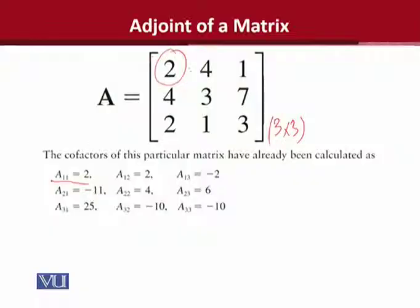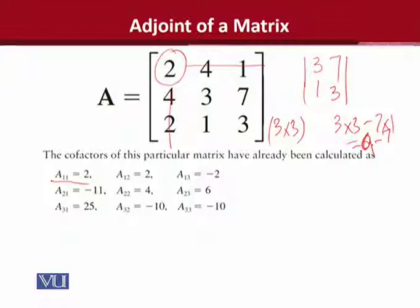For example, at the place of A11 we will consider it and omit this row and its column. We will be left with 3, 7, 1, and 3. Which means 3 into 3 minus 7 into 1. So, the answer would be 3 into 3 is equal to 9 minus 7 into 1 which is 7. So, the answer would be 2.